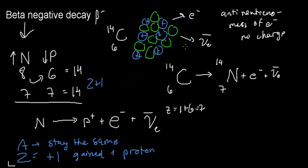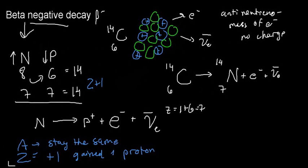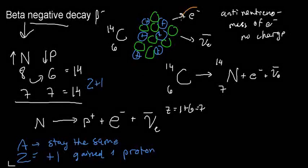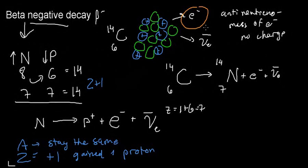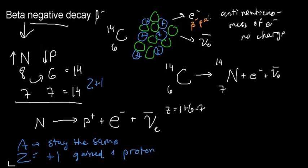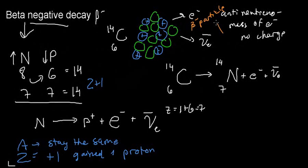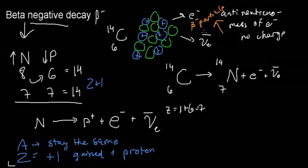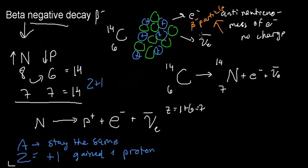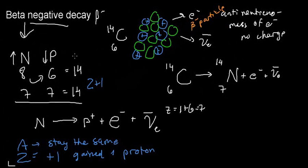If you're wondering why this is called beta negative decay, look at the particle shooting out of the nucleus — it is an electron. A beta negative particle is just an electron, but with a more exotic name because it refers to an electron ejected from the nucleus through decay.